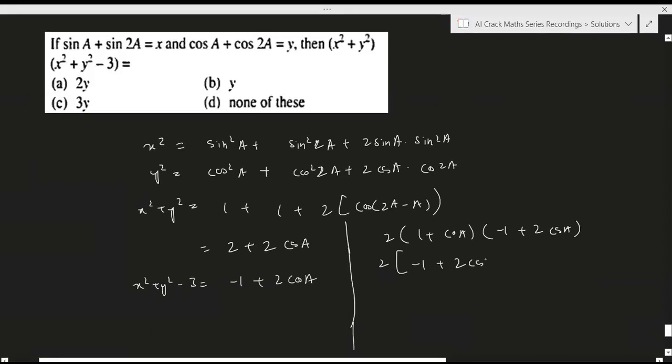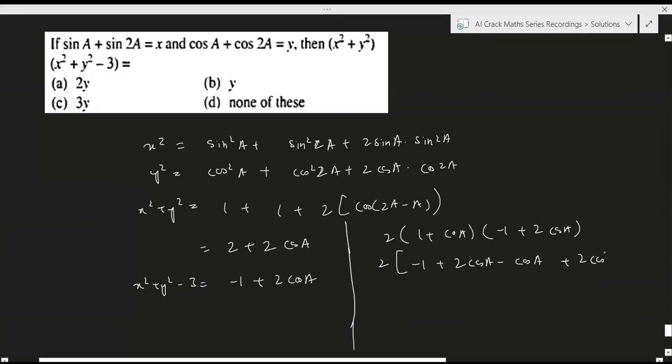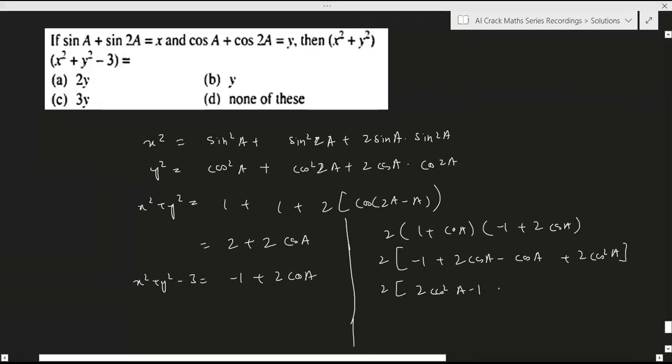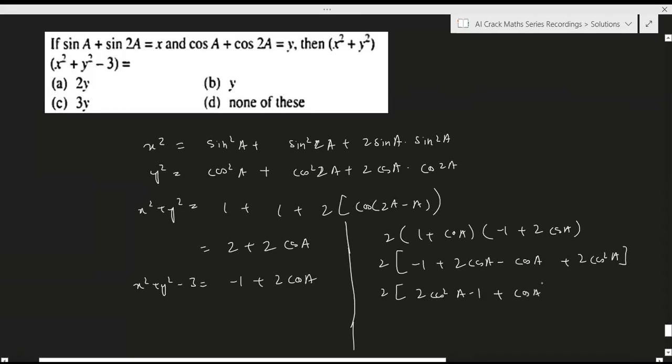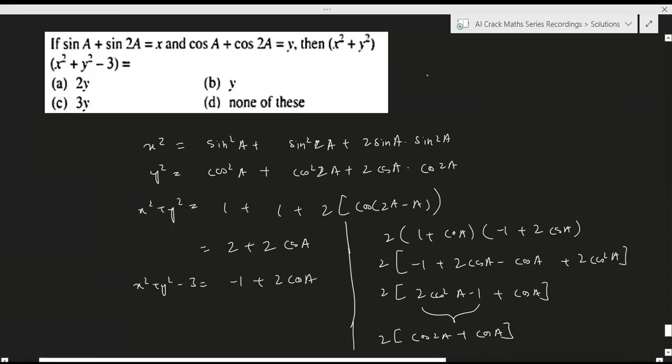...plus 2 cos a minus cos a plus 2 cos squared a. So this is nothing but 2 cos squared a minus 1 plus cos a. Now this is nothing but cos 2a. We get cos 2a plus cos a, so this is y. Therefore 2y is the correct answer, option a.